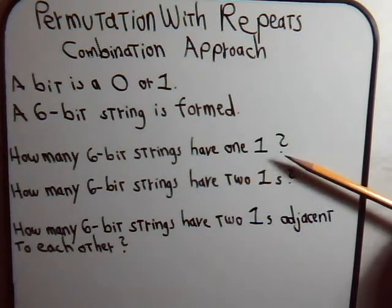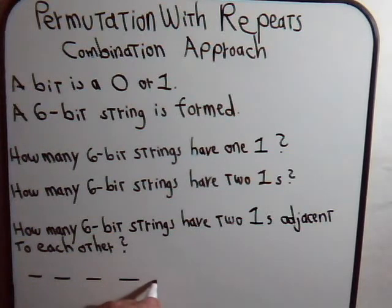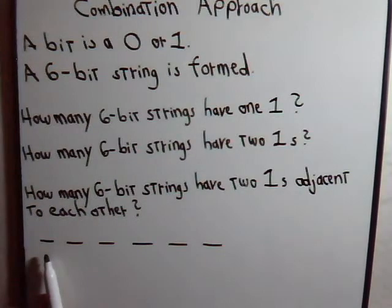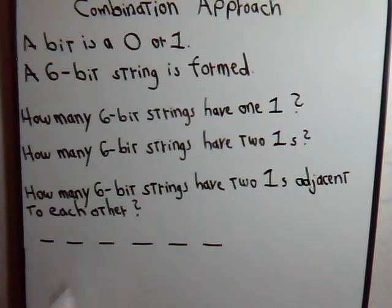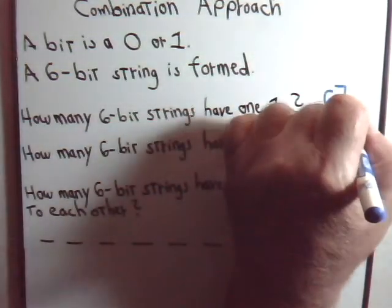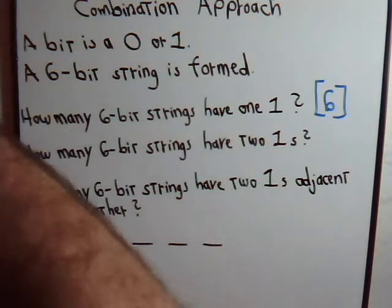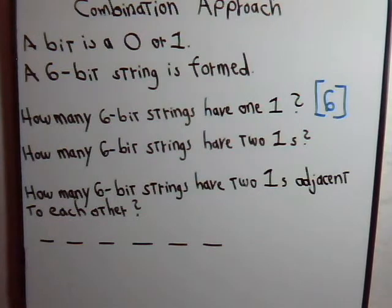The first question here probably seems pretty obvious. I could have a string where the one is here — that's one possible string — or another string where the one is positioned here, or another string where the one is positioned here, and so forth. So clearly the answer to the first question is six. When we're solving these problems, even for simple ones, it's always good to try to draw at least a crude diagram.